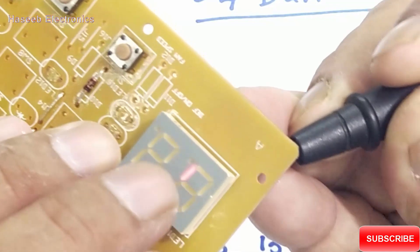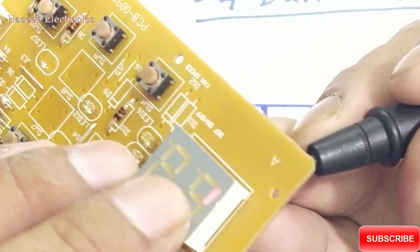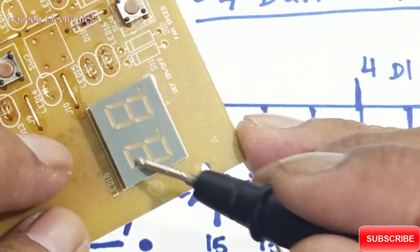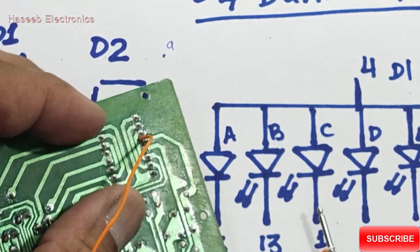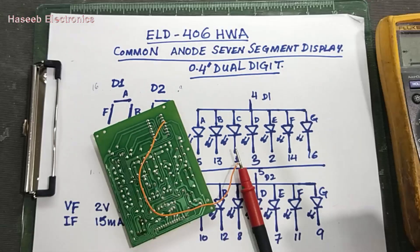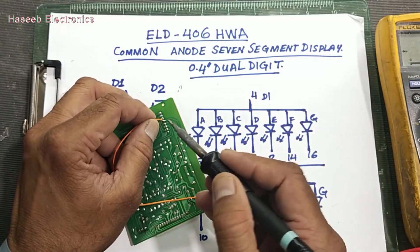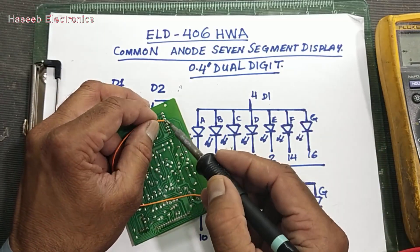It is displaying this segment. 2, 3, so all segments are working in channel A, in D1 area. Now I will connect to the common pin anode, common anode to pin number 5.